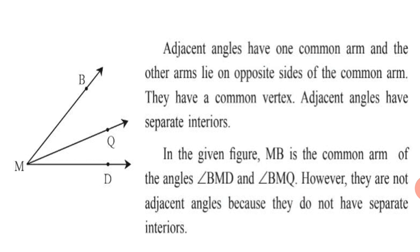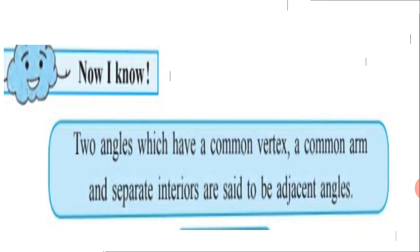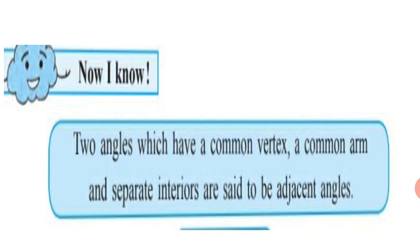So what you have learned now: two angles which have a common vertex, a common arm, and separate interiors are said to be adjacent angles. Try to memorize the definition: two angles which have a common vertex, a common arm, and separate interiors are said to be adjacent angles. Now let us move to Practice Set 15.